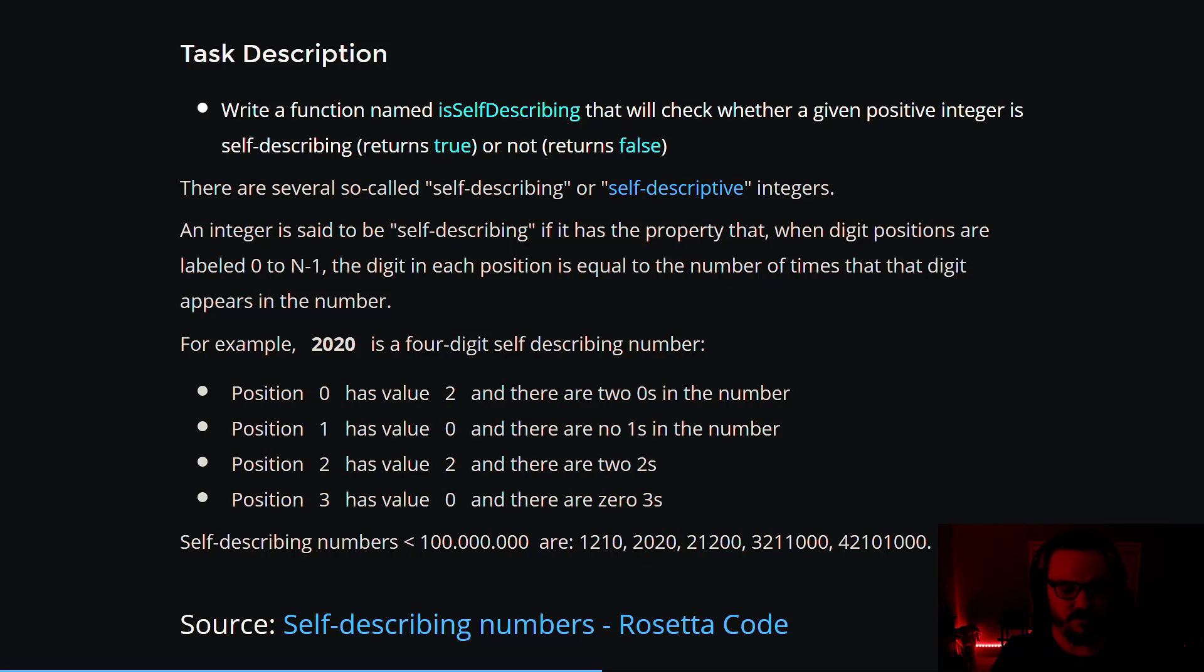So self-describing numbers that are less than 100 million are 1210, 2020, 21200, 3211000, and 42101000.